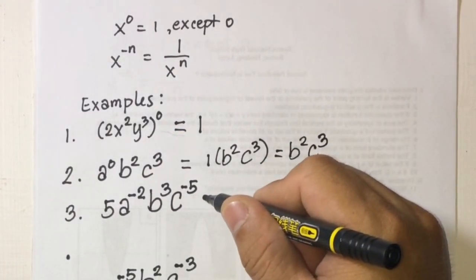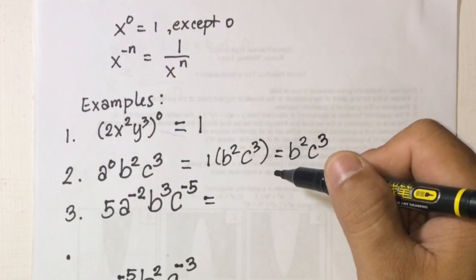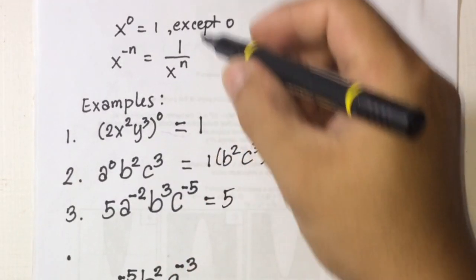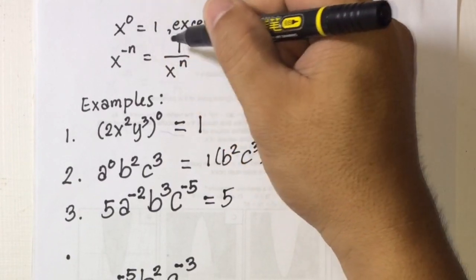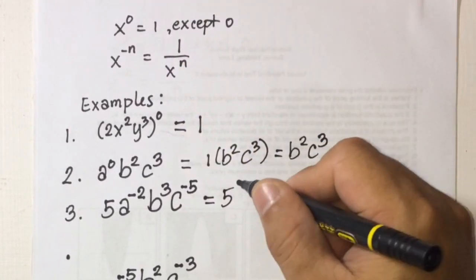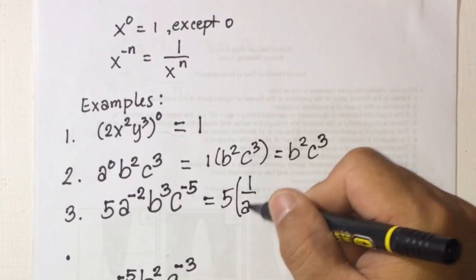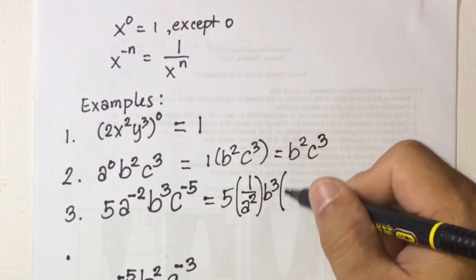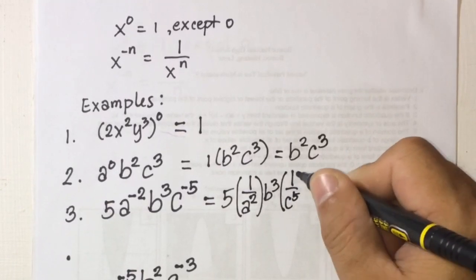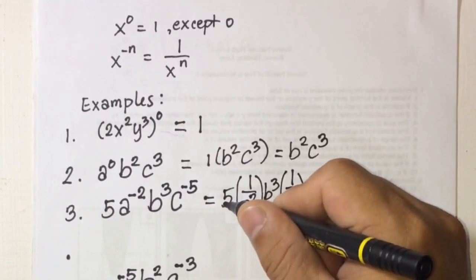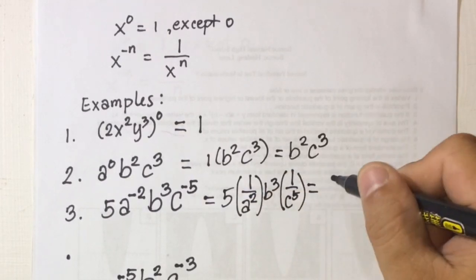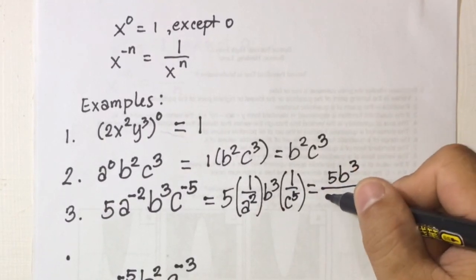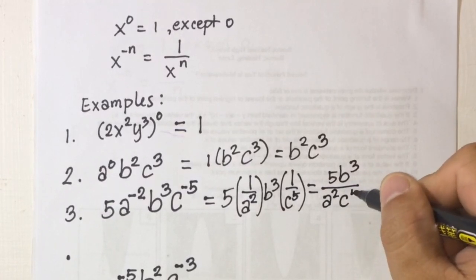Number 3: 5a to the power of negative 2, b cubed, c cubed. So we're going to have 5. Then a to the power of negative 2 — using x to the power of negative n equals 1 over x to the power of n — this will be 1 over a squared. So your answer here will be 5b cubed over a squared c to the power of 5.